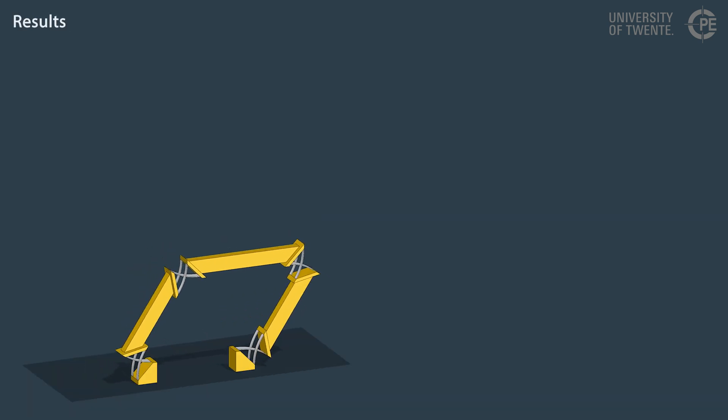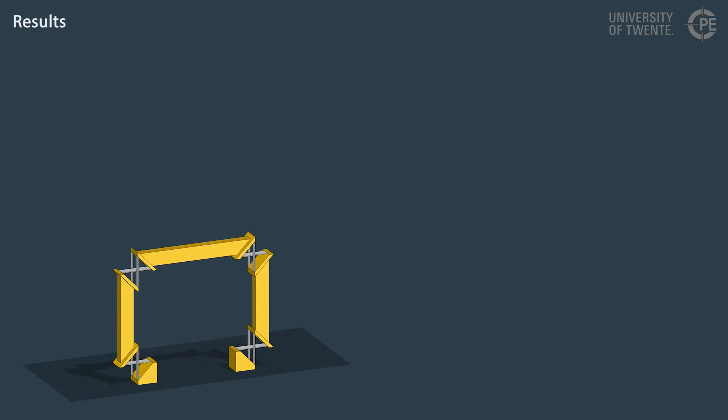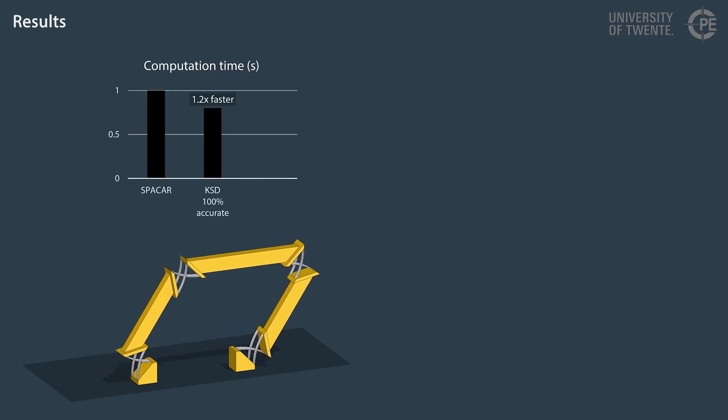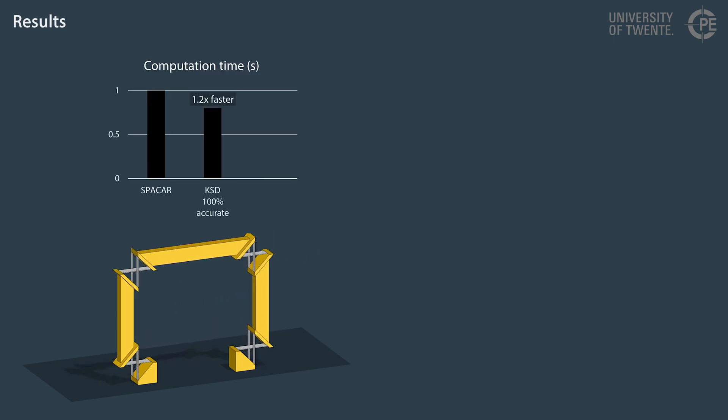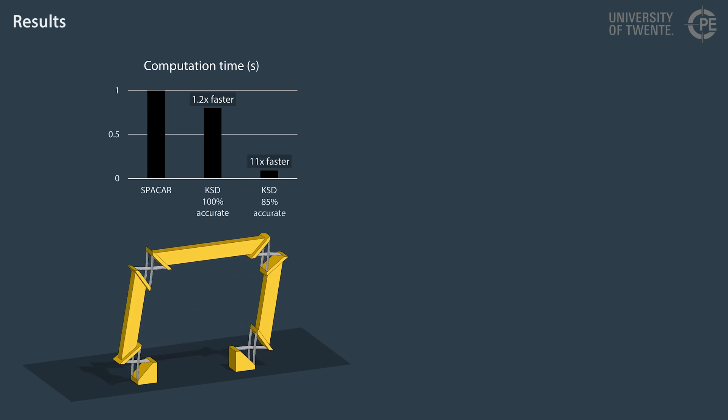The kinematically started deformation method computes the deformed configuration of this 4-bar mechanism 1.2 times faster than the conventional algorithm in SPACAR, with the same accuracy. If a small inaccuracy is allowed, the computation is 11 times faster.